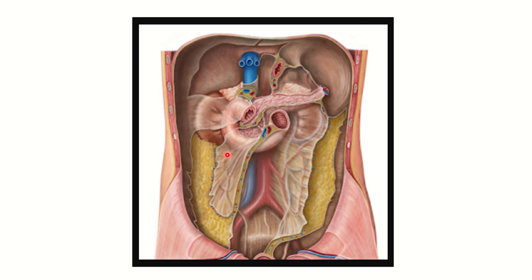We can also see the great vessels such as the abdominal aorta and inferior vena cava — these are retroperitoneal structures. When hemorrhage occurs in the retroperitoneum, that means behind the peritoneum. It may occur from these structures such as the pancreas, kidney, suprarenal gland, abdominal aorta, or inferior vena cava — different structures which lie behind the peritoneum.